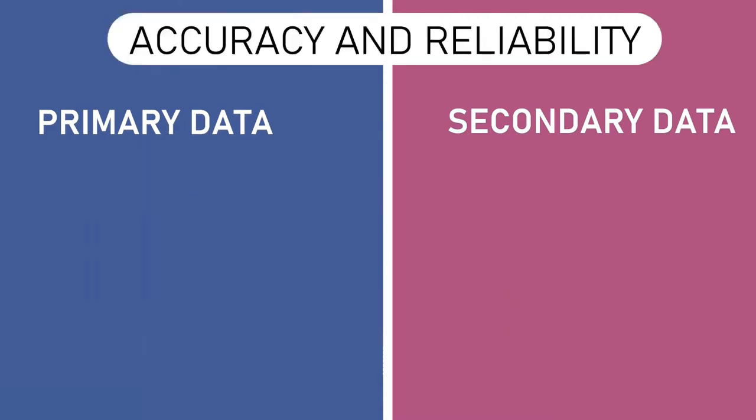Accuracy and reliability: Primary data is more accurate and reliable, whereas secondary data is relatively less reliable and accurate. This is mainly because the secondary data sources are not regulated and are subject to personal bias.